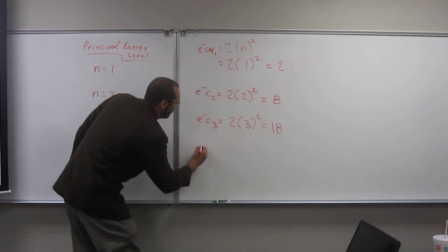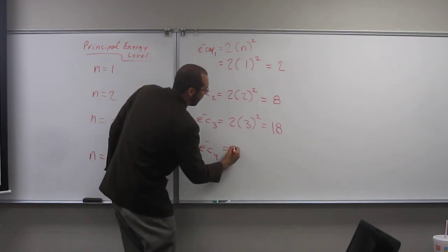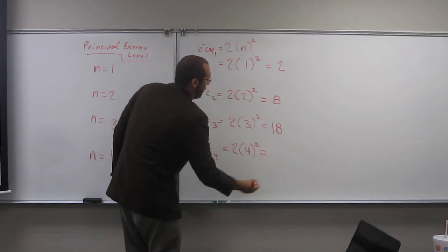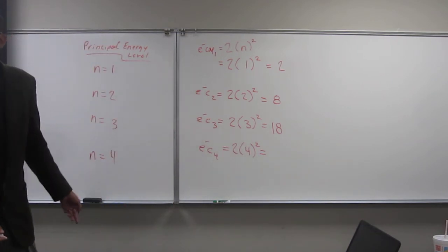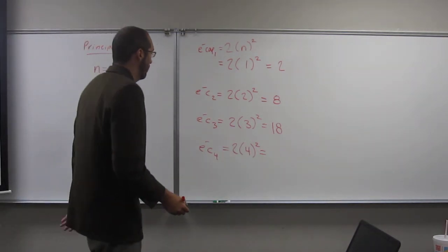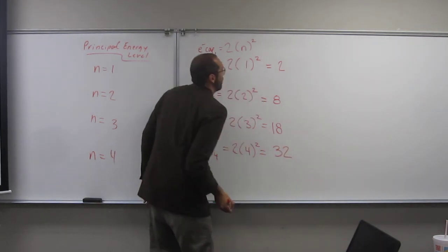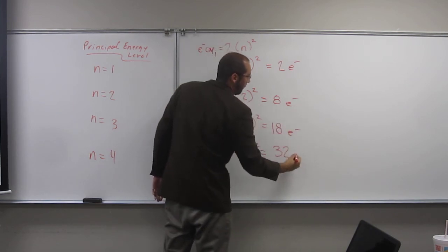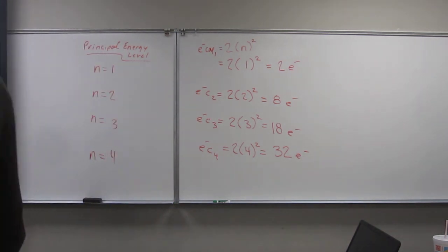And then the last one, electron capacity for 4, 2 to the 4 squared. So, it's 4 squared, 16 times 2, 32. So, 2 electrons for the first one, 8 electrons for the second one, 18 for the third one. Okay.